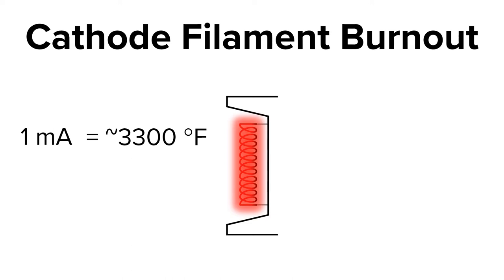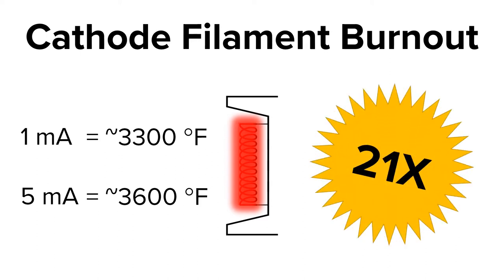But if you make an exposure at 5MA, you're heating the filament to about 3,600 degrees Fahrenheit. This 300 degree difference between 1MA and 5MA causes the filament to burn out 21 times faster. High heat is the number one cause of cathode filament burnout.